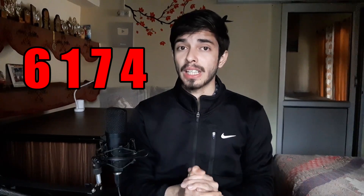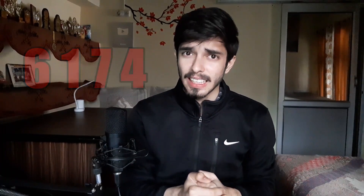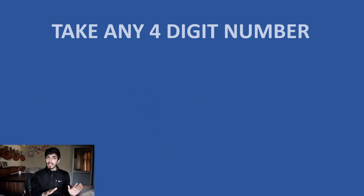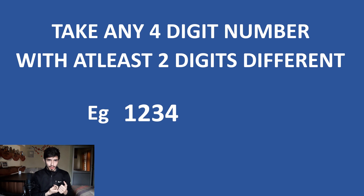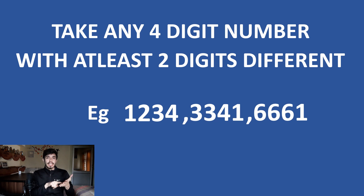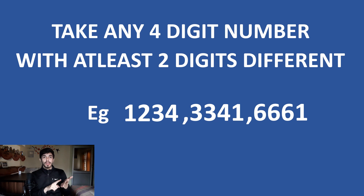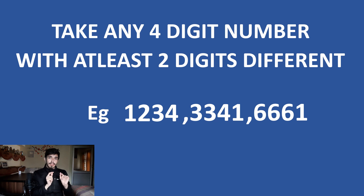6174 — this number is known as Kaprekar's Constant. Now what is so special about this number? If we take any four-digit number with at least two digits different — for example 1234, 3341, or 6661 — where at least two digits are different, like 6 and 1. We can't take something like 1111 or 9999 where all digits are the same; that won't work.